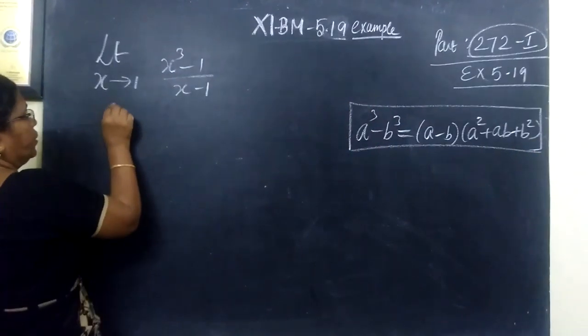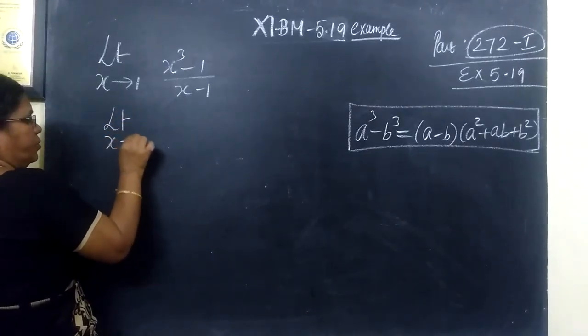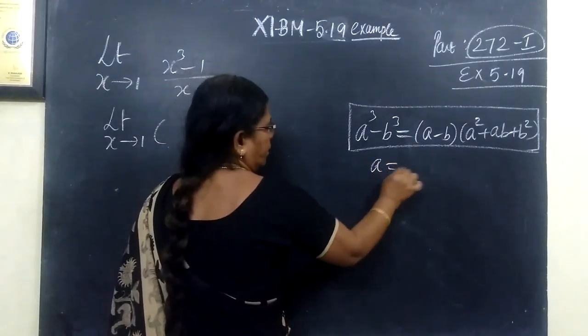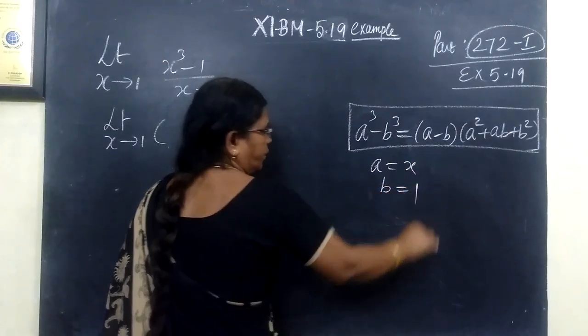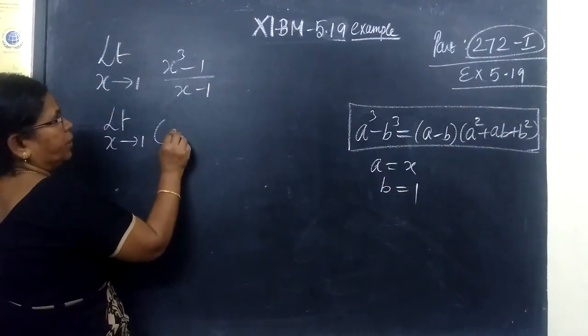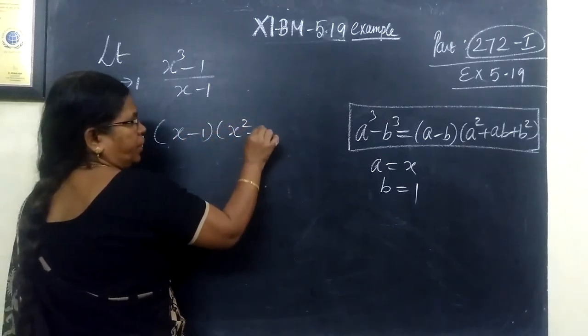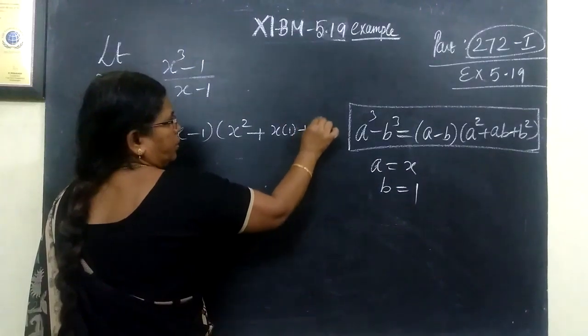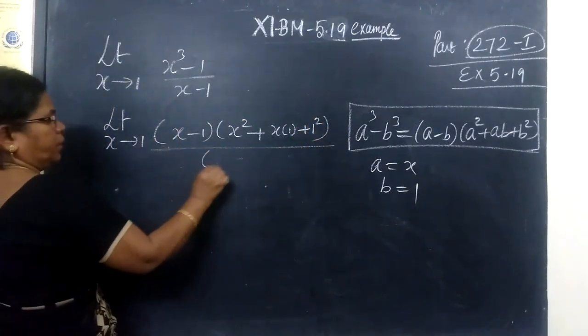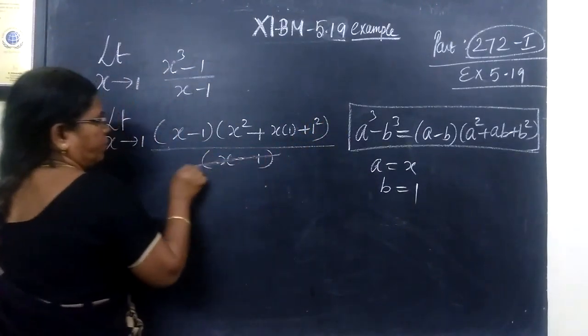So we will use the formula. Limit x tends to 1. Applying the formula, a is x, b is 1. So that you are writing a minus b, applying the formula x minus 1. a square means x square, ab means x bracket 1, then b square means 1 square.